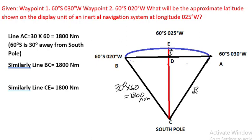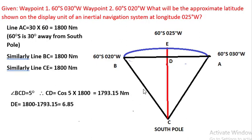Similarly, A-C will also equal 1800 nautical miles, and line C-E is also going to be equal to 1800 nautical miles. What we have to find is the distance of D-C. To find distance D-C, we will have to use trigonometry and consider triangle B-C-D.